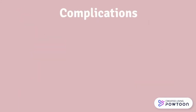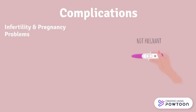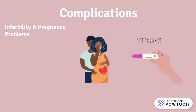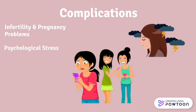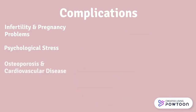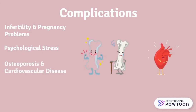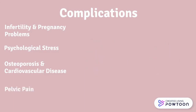While amenorrhea is not life-threatening, it may lead to complications and increased long-term risks. One complication is infertility and problems with pregnancy — if a woman doesn't ovulate and doesn't have her period, pregnancy cannot occur, and if the cause is a hormone imbalance, miscarriage can also result. Psychological stress can be a serious complication, particularly for young women who may feel scared or saddened by not getting their period. Other complications include osteoporosis and cardiovascular disease from a lack of estrogen, and if amenorrhea is caused by an anatomical problem, pelvic pain may arise. Due to these complications, amenorrhea should always be evaluated by a healthcare professional.